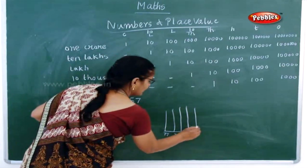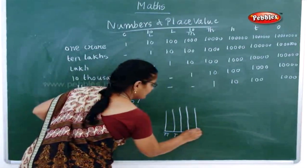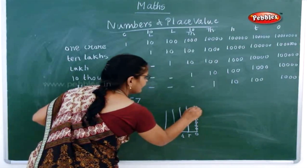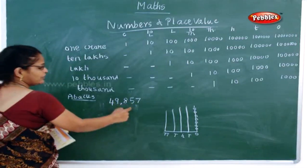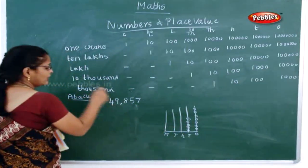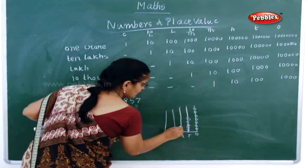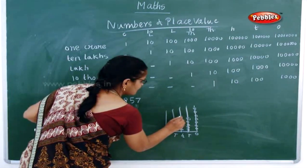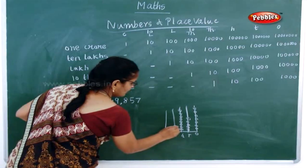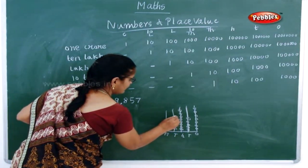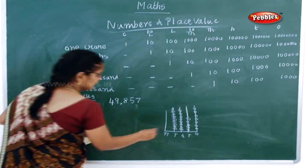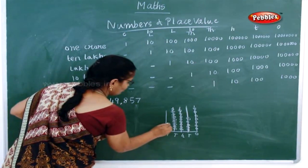How many rings will be here? You will have seven here: one, two, three, four, five, six, seven. Now how many tens? Five tens: one, two, three, four, five, six, seven, eight. Now how many thousands? One, two, three, four, five, six, seven, eight, nine. Now how many ten-thousands? Four: one, two, three, four.